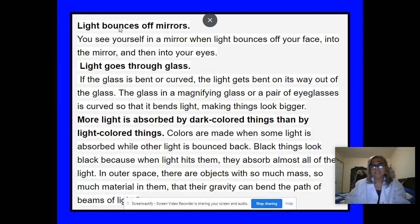For example, light bounces off mirrors. You see yourself in a mirror when light bounces off your face, into the mirror, and then into your eyes. Light goes through glass. If the glass is bent or curved, the light gets bent on its way out of the glass. The glass in a magnifying glass or a pair of eyeglasses, like I'm wearing now, is curved so that it bends light, making things look bigger.